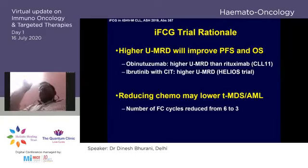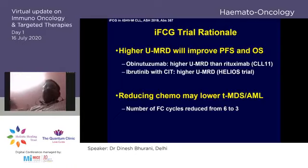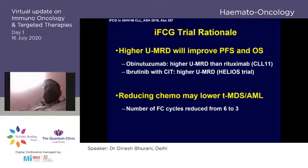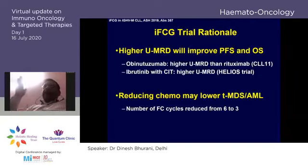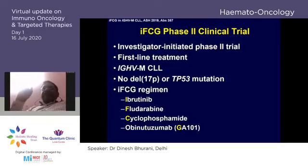The MD Anderson trial combined ibrutinib with FC and obinutuzumab — called FCG rather than FCR. We cannot afford to replicate that exactly, but could we design our own trial combining these molecules? Instead of six cycles of FCR, they gave only three cycles of FCG plus ibrutinib for a limited period. This looks promising: combining chemotherapy with targeted therapy gives a flat survival line and high MRD negativity — and importantly, this is for the good-risk group: young, IGHV-mutated patients.